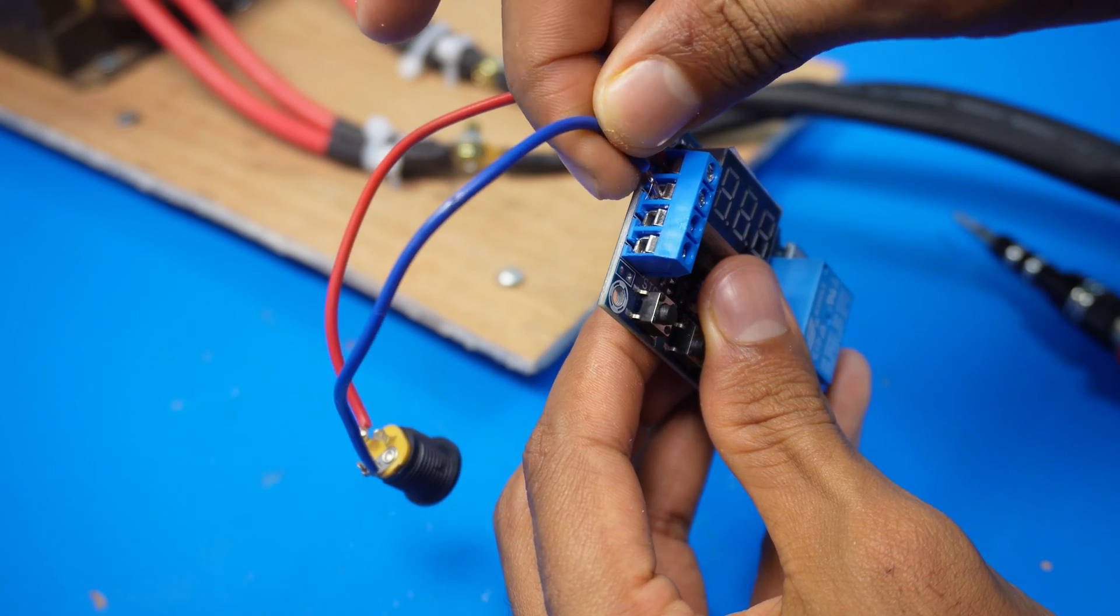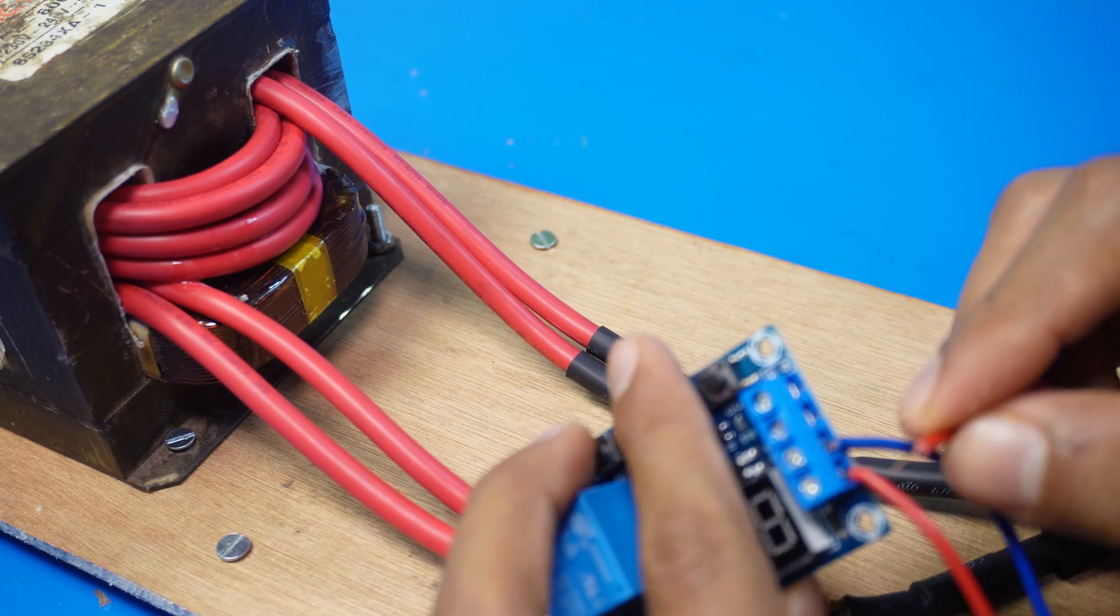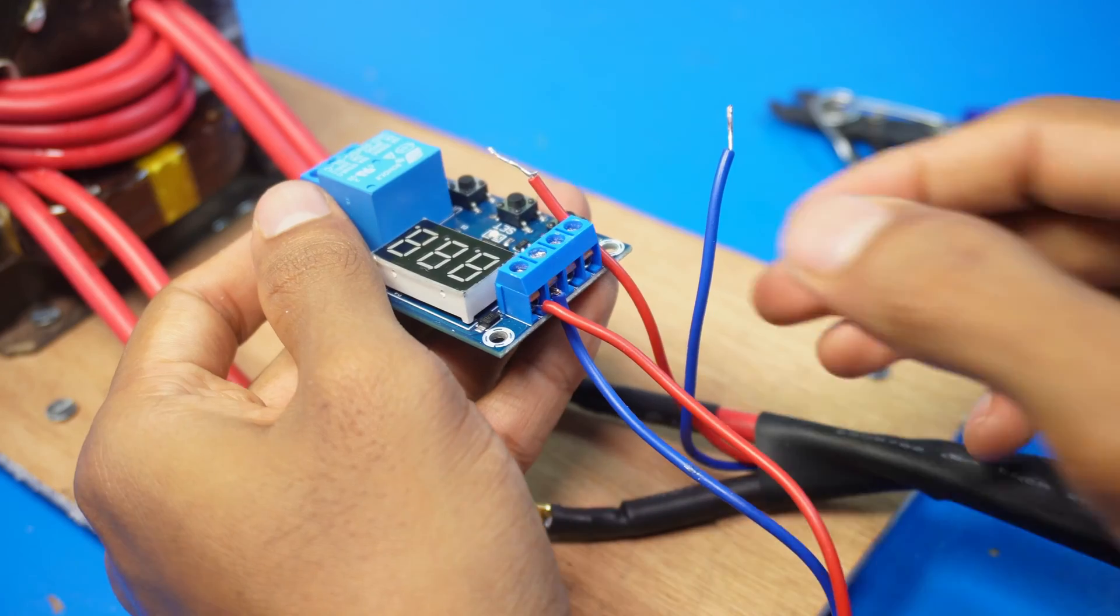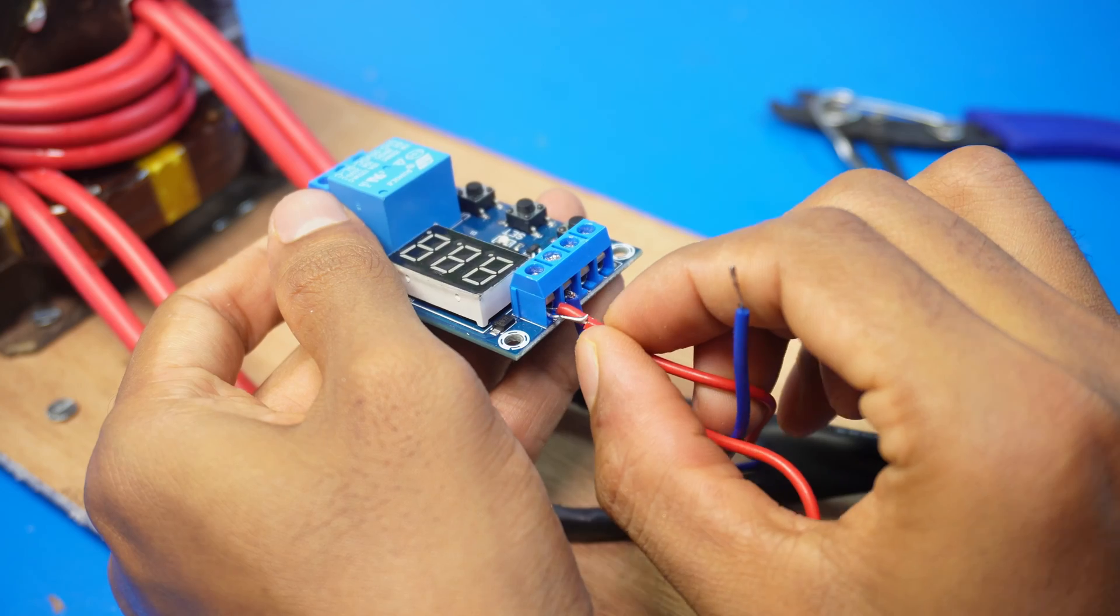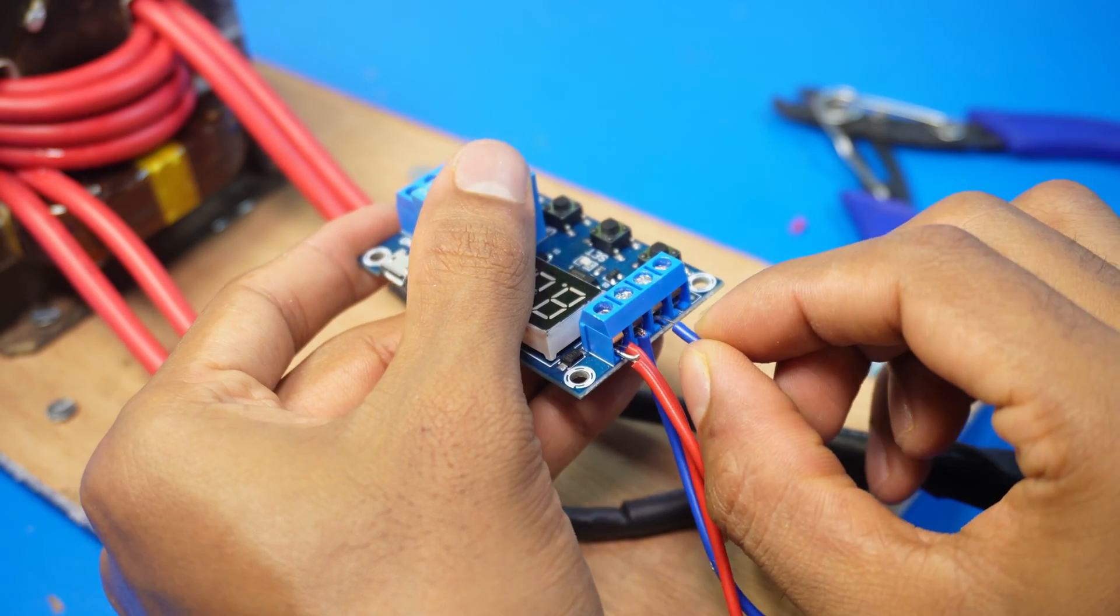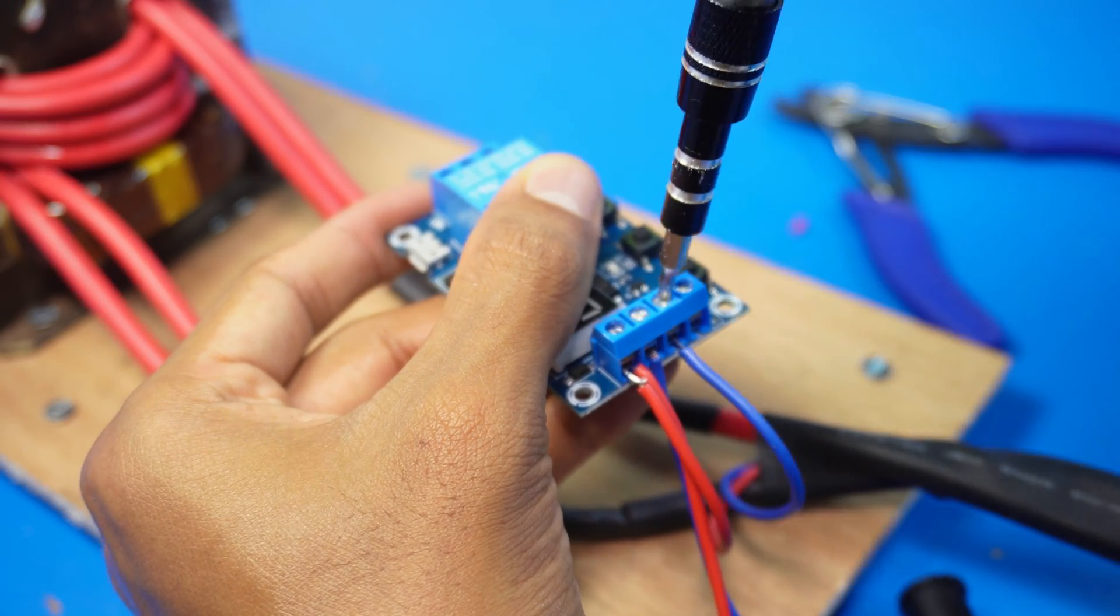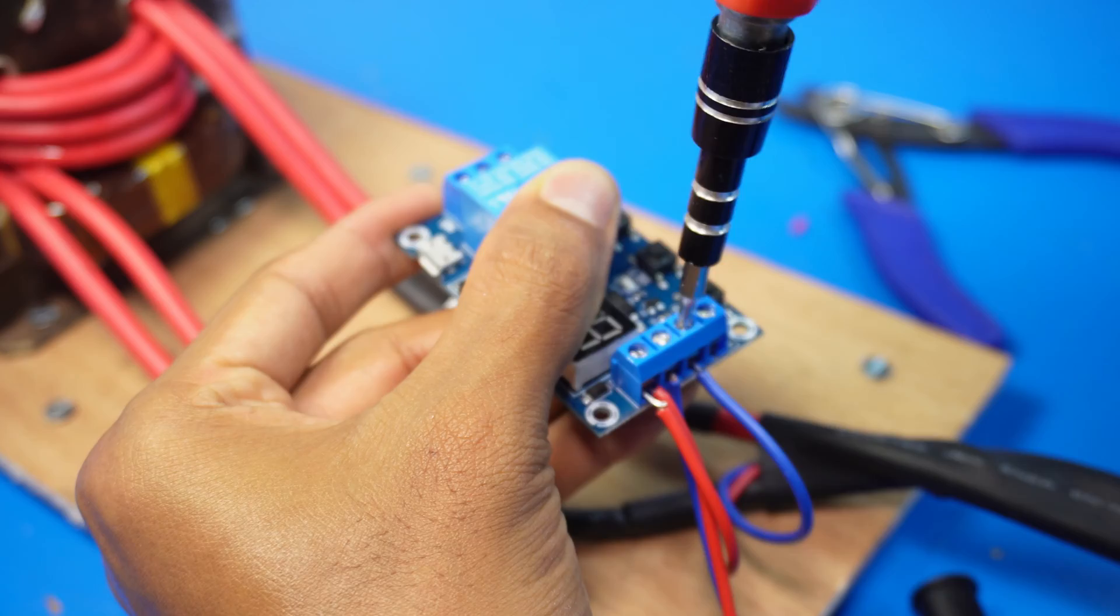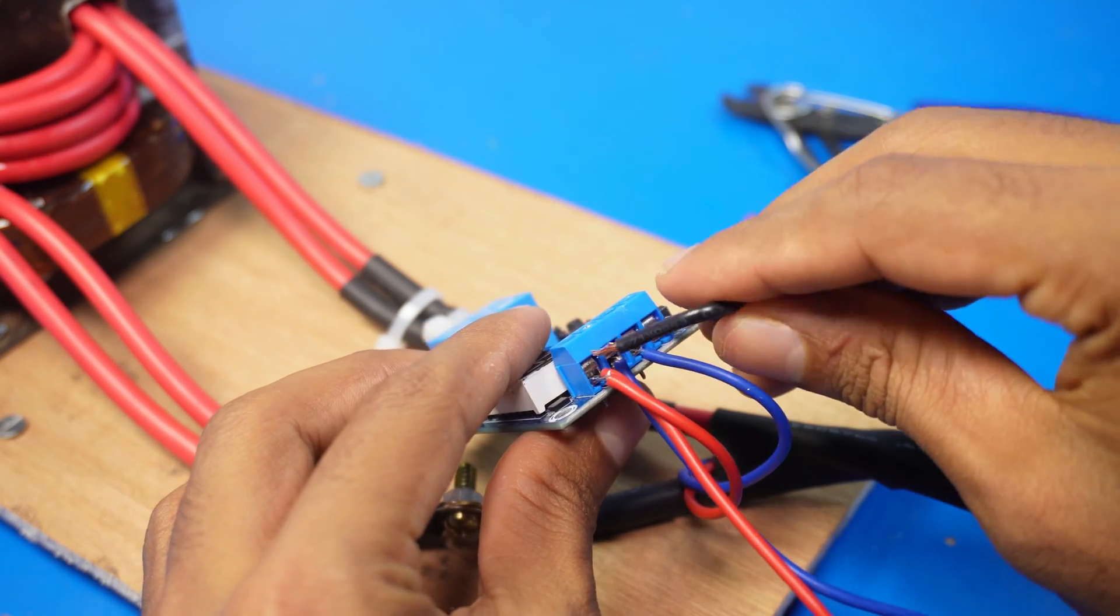To wire it correctly, the positive of the input goes to the first slot and the negative to the second slot. The positive of the trigger switch connects to the positive of the input and the negative connects to the third terminal from the positive. The second and fourth slots must be connected to each other for it to work.